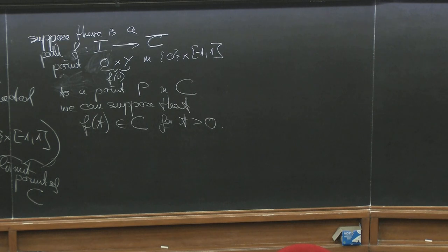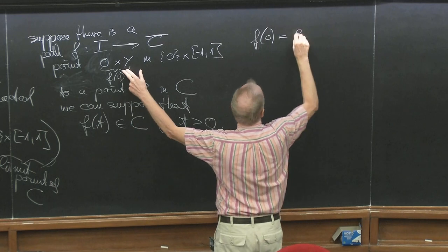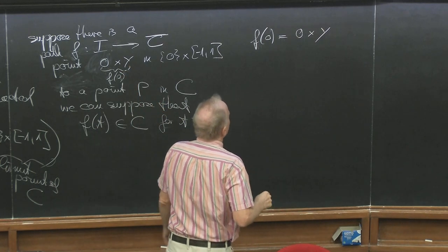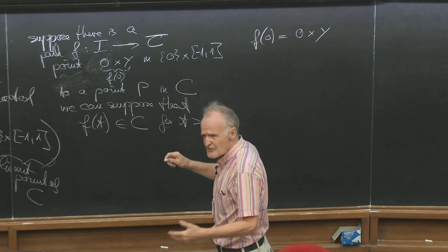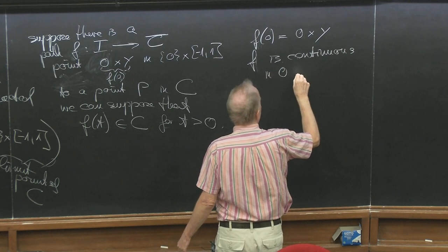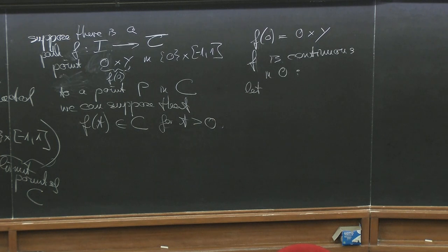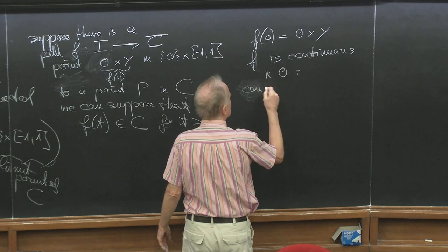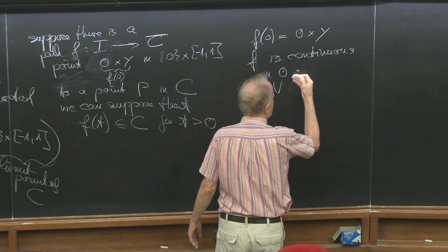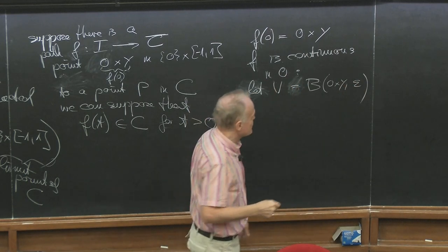So f(0) = 0 × y, some point on the interval. f is continuous at 0. Let v be a ball around 0 × y with some small radius epsilon — this is open in C-bar, a neighborhood of 0 × y in C-bar. We are in the subspace topology of R².